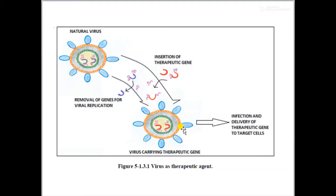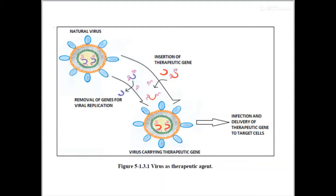Transduction is a process by which a vector is used to carry your gene of interest onto a particular host cell. Sometimes you can have a natural virus — it could be phage vectors, as mentioned earlier. You incorporate the recombinant gene into the virus vector, and the virus carrying the therapeutic gene would infect the target cell.